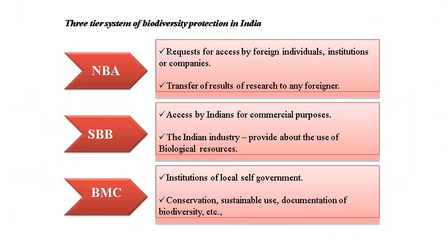This slide shows the three-tier system of biodiversity protection in India: NBA, SBB, and BMC. NBA deals with requests for access by foreign individuals, institutions, and companies, and the transfer of research results to any foreigner. SBB — the State Biodiversity Board — handles access by Indians for commercial purposes and the Indian Registry relating to use of biological resources. BMC, the Biodiversity Management Committees, is the local body and institution of local self-government; they can conserve, sustainably use, and document biodiversity.